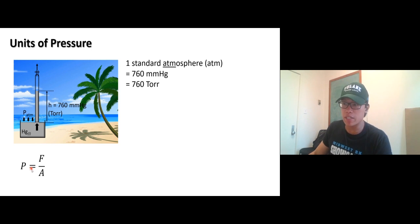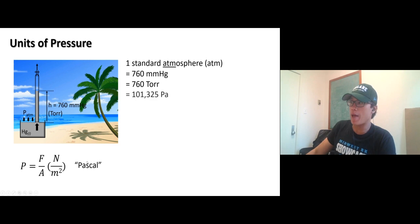Other types of unit of pressure: pressure from physics is force over area, F over A. The SI unit is newton, that's a unit of force, and area is meters squared, or we call it Pascal. One atm is 760 millimeter mercury or torr, or 101,325 Pascal. Since Pascal is really small, we usually use kilopascal.